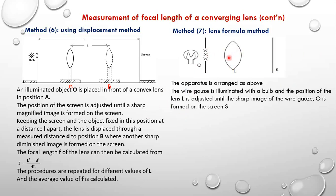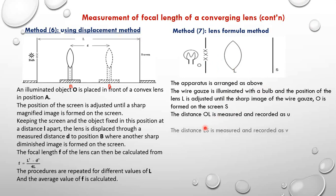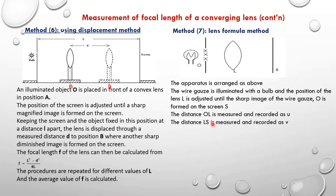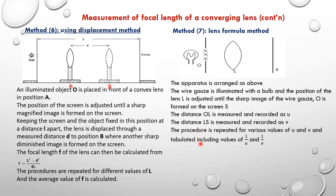After obtaining a sharp image, we shall measure the distance O–L and record it as U, and also measure the distance L–S and record it as V. We repeat the procedure to get different values of U and V. We then tabulate our results, including columns for U, V, 1/U, and 1/V.